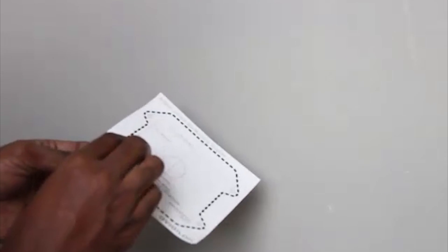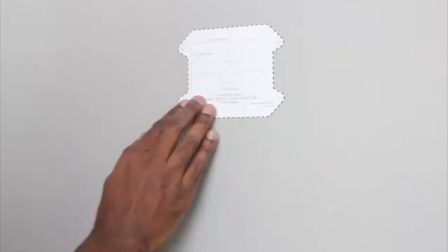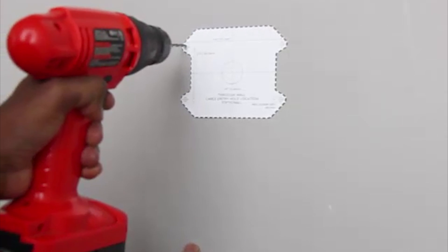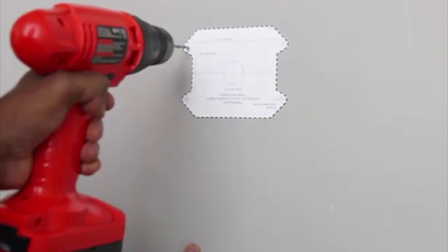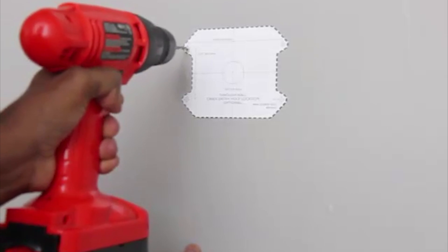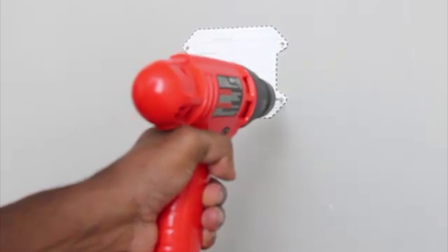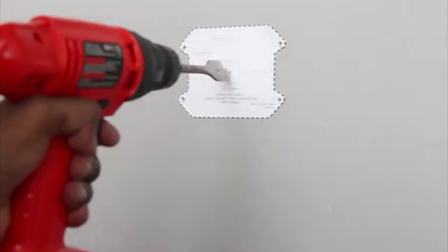Start with the mounting template to drill four mounting holes into the mounting surface. Next, drill the cable entry hole into the mounting surface.